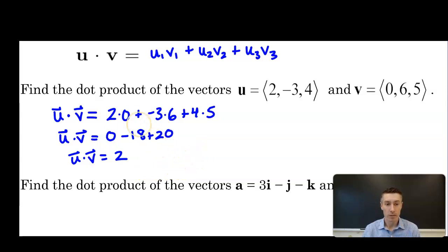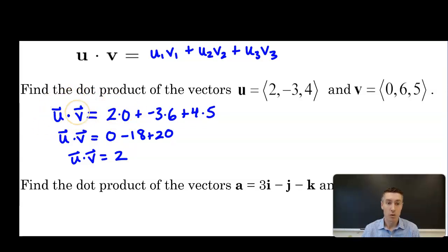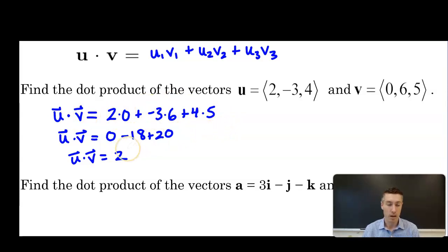One thing about notation: we use the dot symbol for traditional multiplication, and now we're also using it for the dot product. The way we know the difference is that on the left side u and v are both vectors, so that dot represents the dot product, whereas on the right side we're just using the dot as a symbol for traditional multiplication. Make sure we differentiate that.